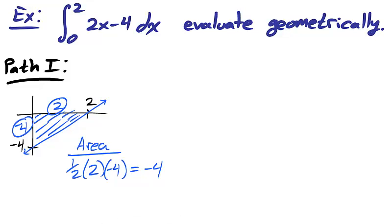Therefore, the area under the curve is negative 4, which is precisely the definite integral of 2x minus 4 between 0 and 2.